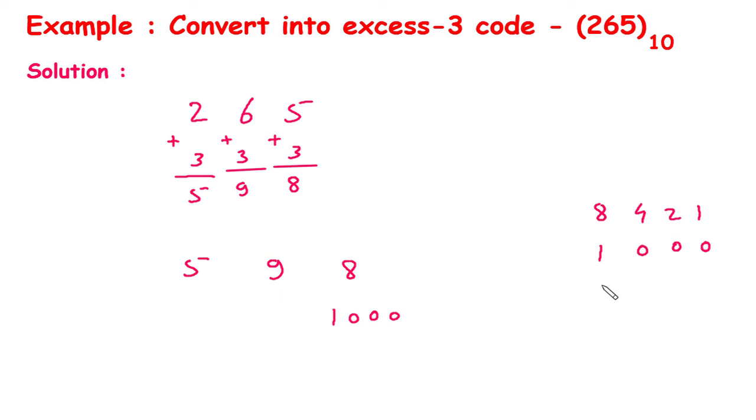Then this 9. So 1, 1. 8 plus 1 is 9. This will be 0, 0. So 1, 0, 0, 1.